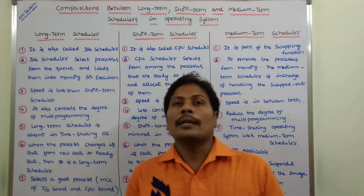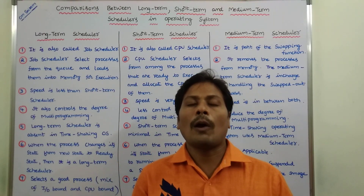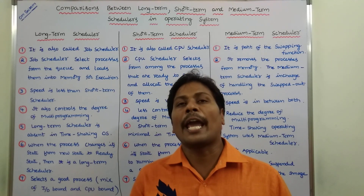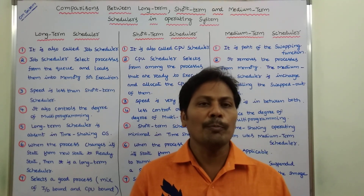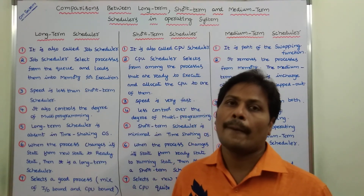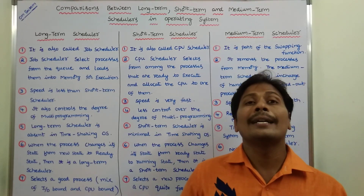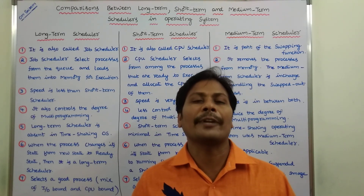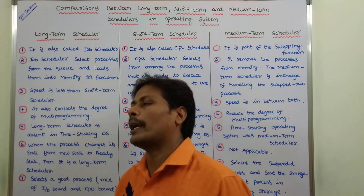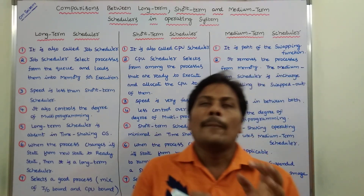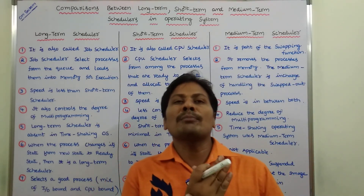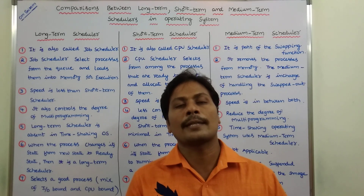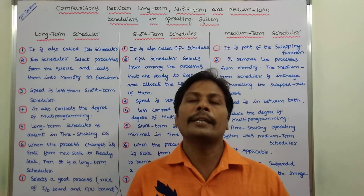The long-term scheduler selects a good mix of I/O bound and CPU bound processes. The short-term scheduler selects a new process that occurs quite frequently for the CPU. The medium-term scheduler selects a suspended process and saves the image of the suspended process in secondary memory.